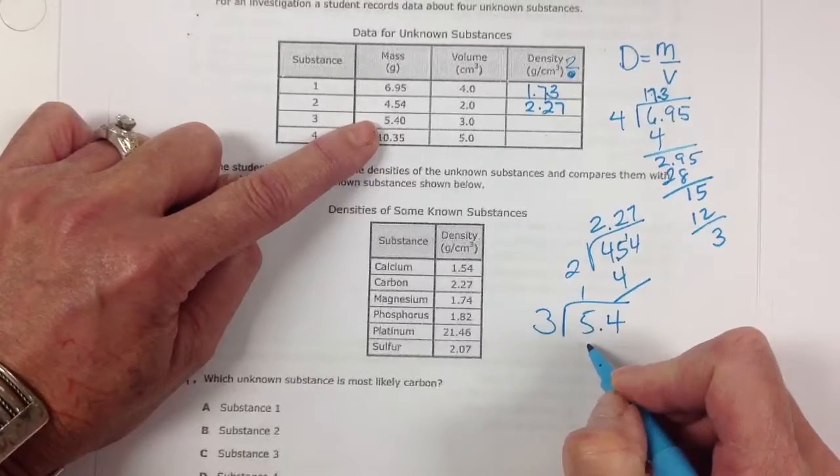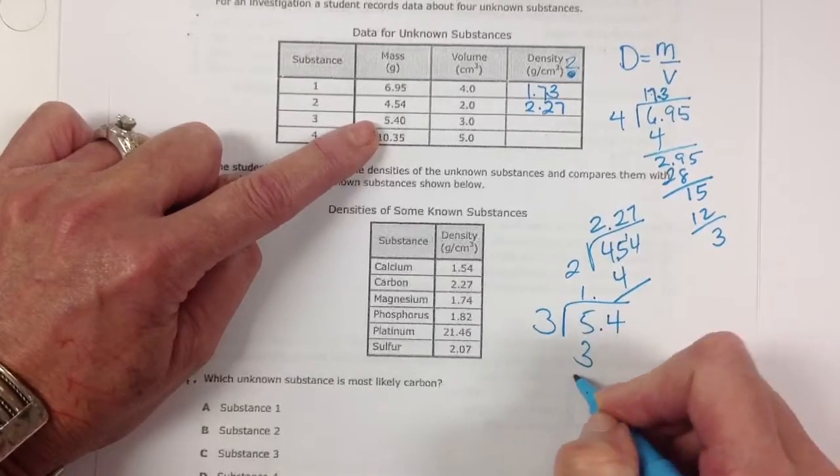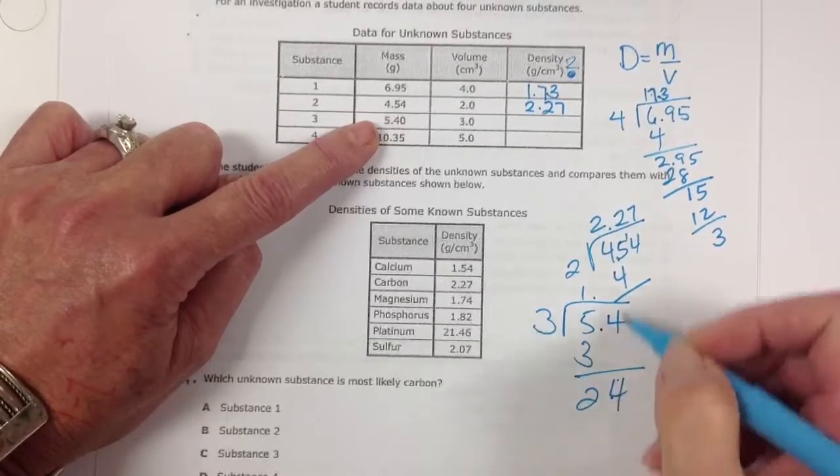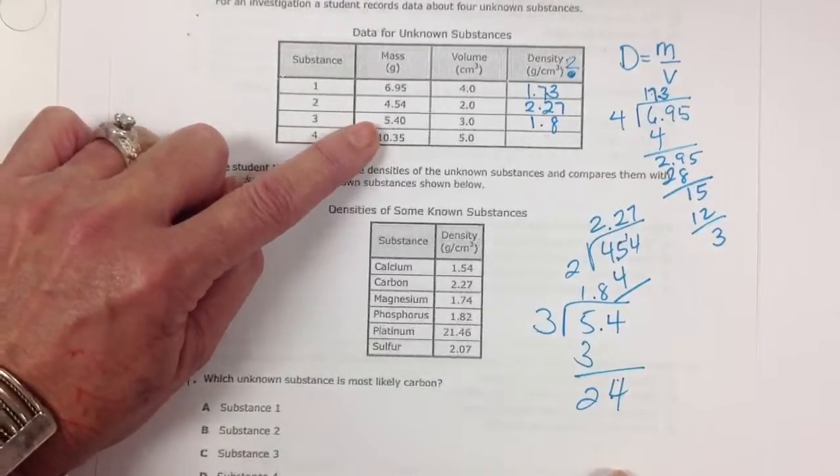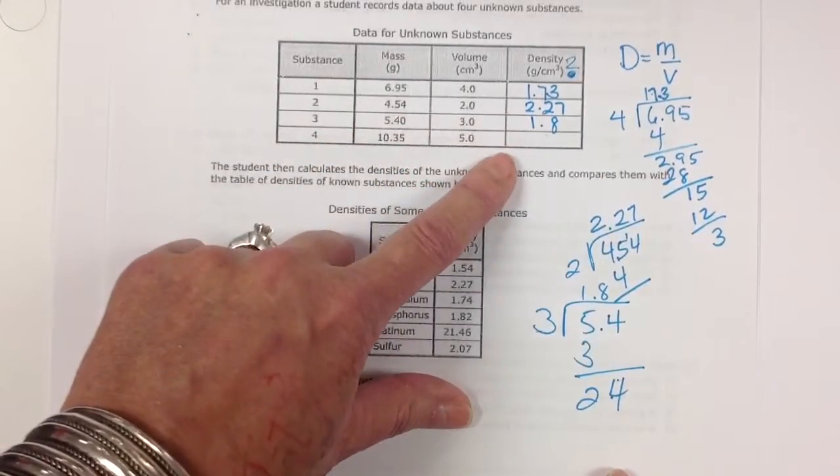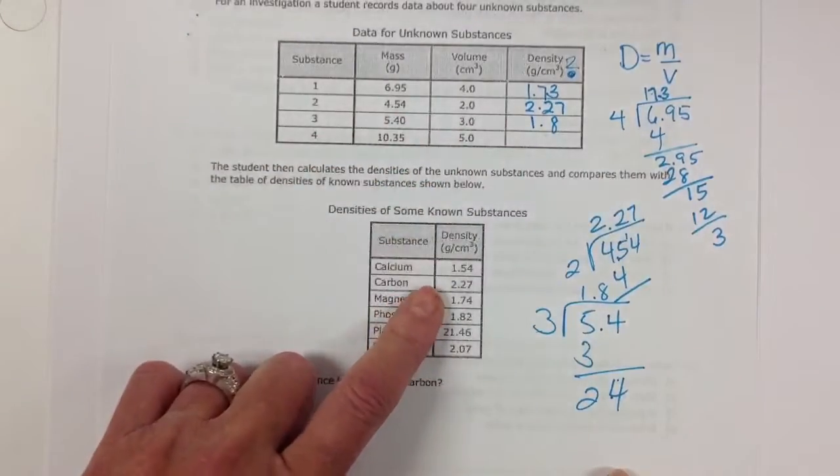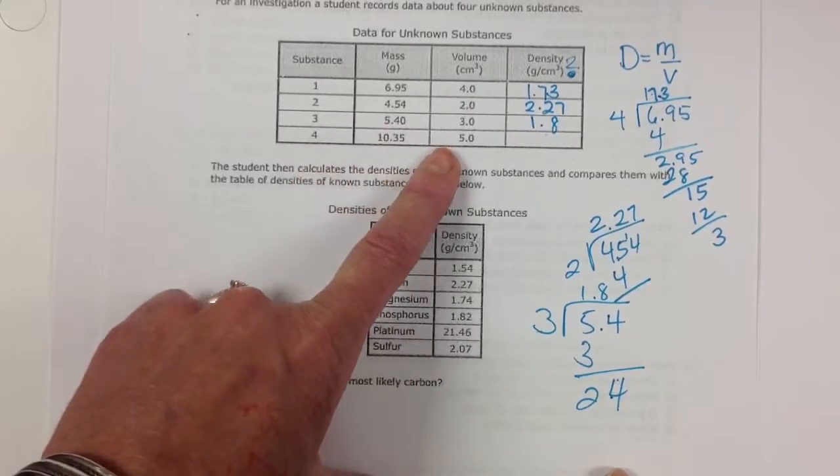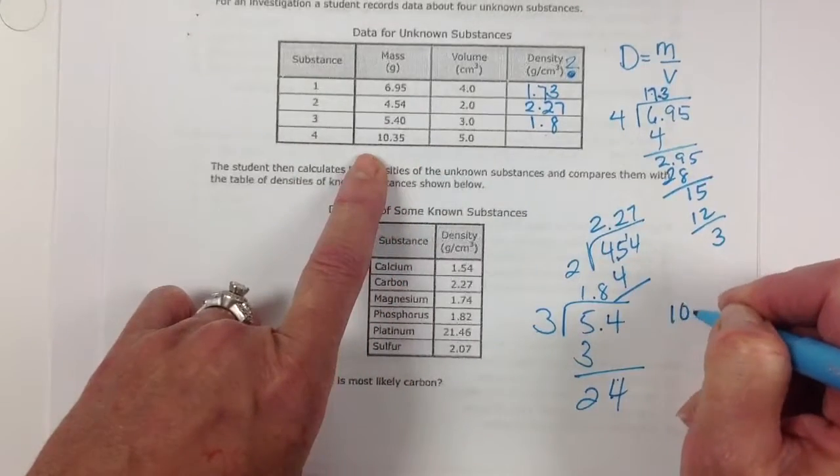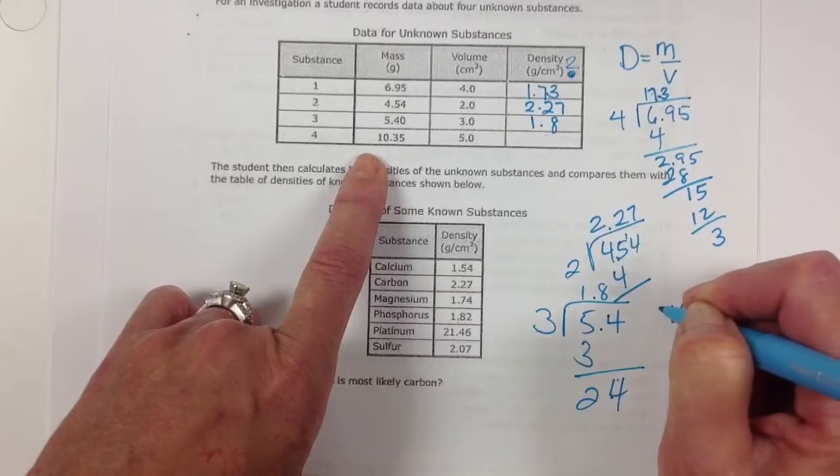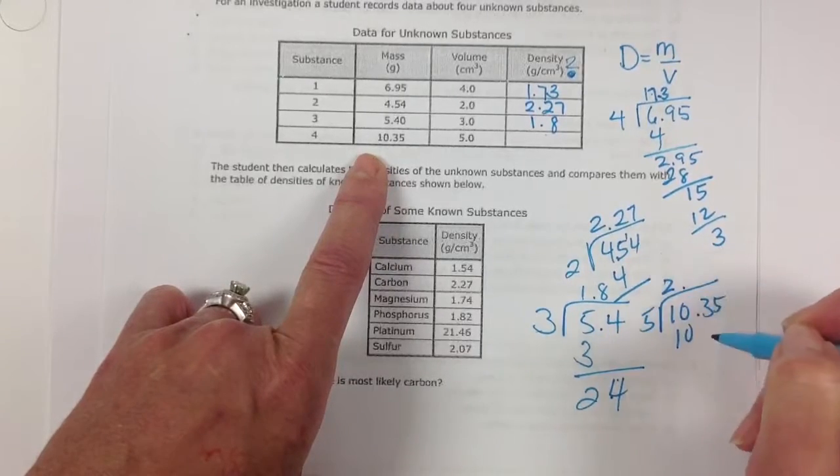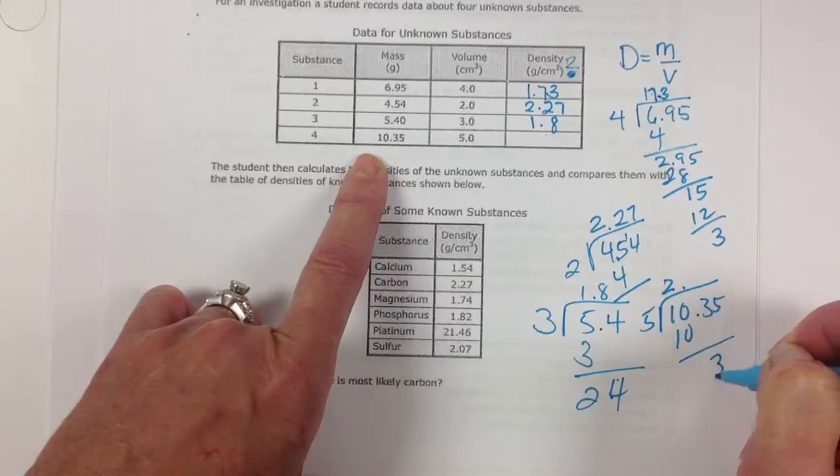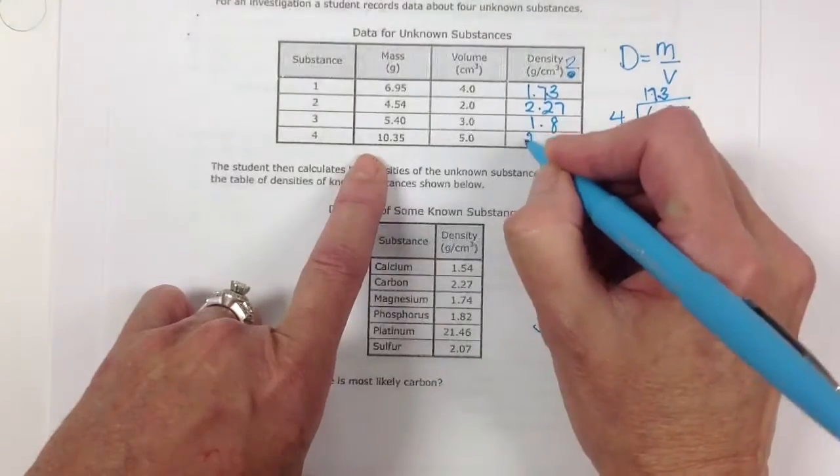5.4 divided by 3. That goes once. 5.5 times. And the remainder of 2. And the remainder of 2. And that goes 8. So 1.8. So here you see what I'm doing. I'm calculating to find the density so that I can actually go back and answer the question. 10.35 divided by 5.